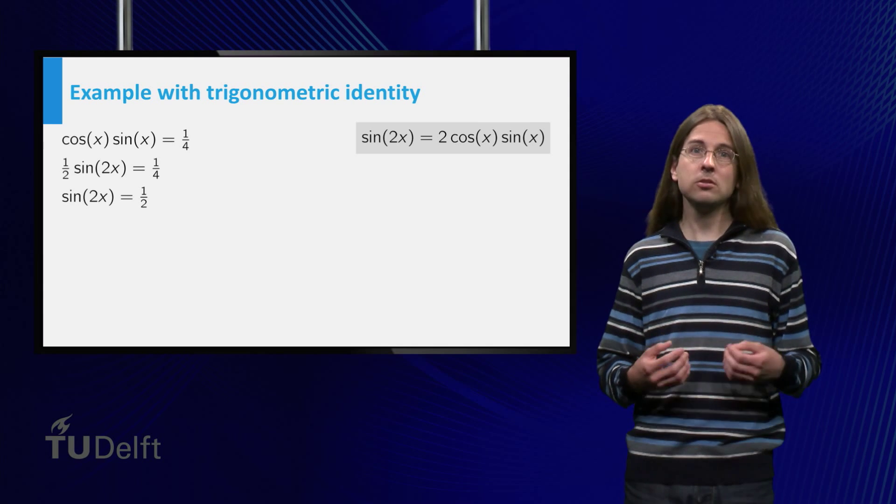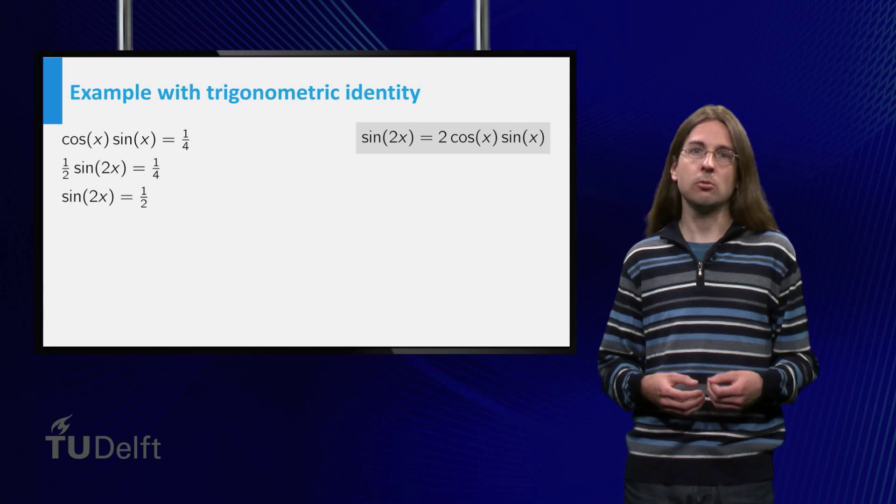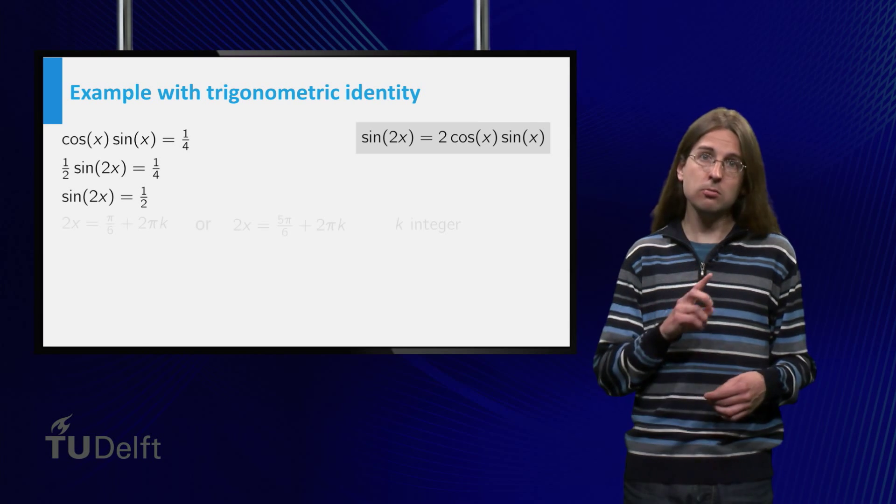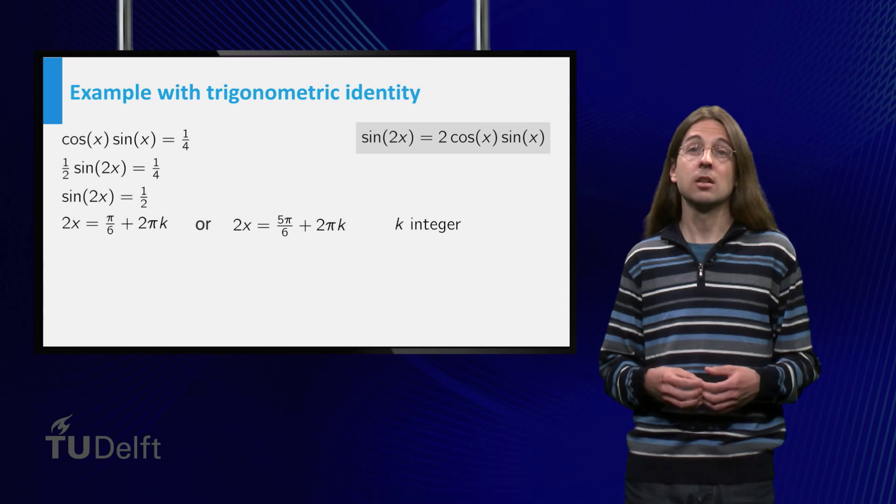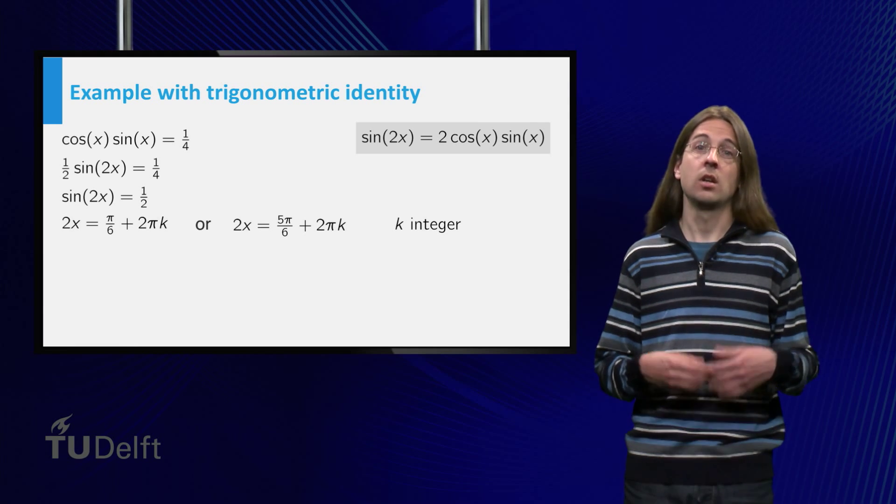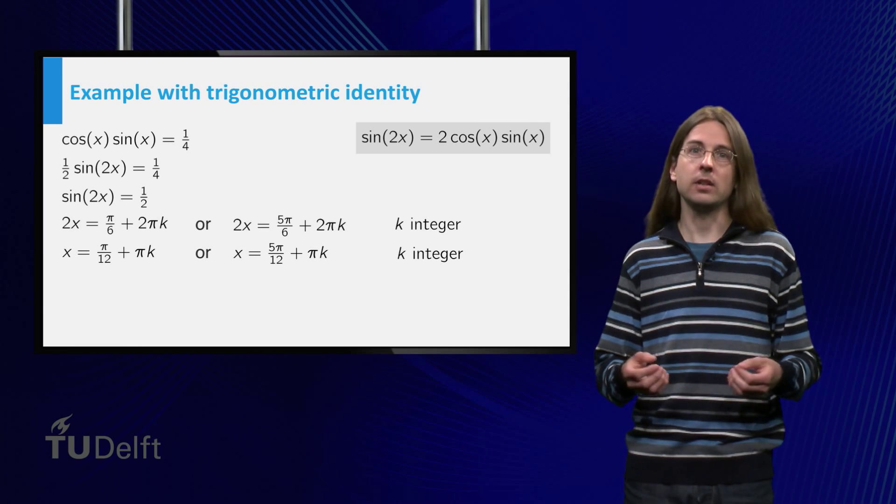We can now use that we already solved sin(x) = 1/2 to obtain that 2x = π/6 or 5π/6 + 2πk. Dividing by 2 gives our final solution.